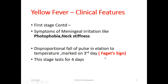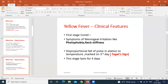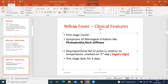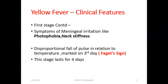The Faget sign refers to a disproportional fall of pulse in relation to temperature. There was a typing mistake in the slide which has been corrected. This sign is marked on the third day and this first stage lasts for four days.